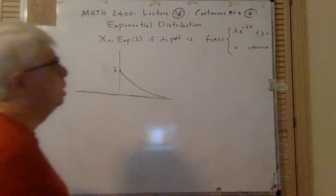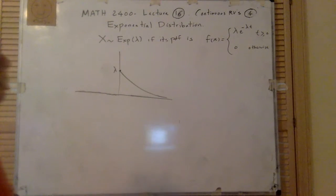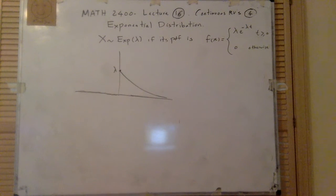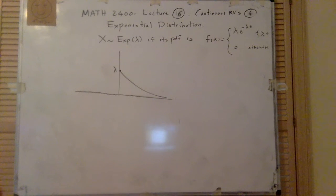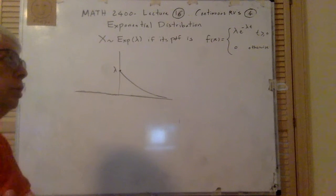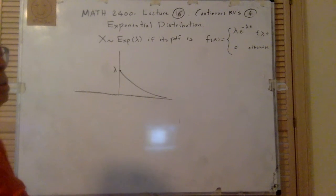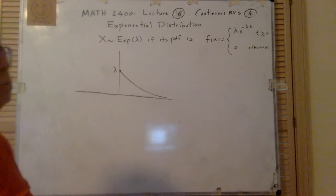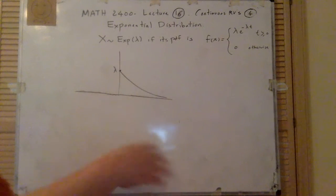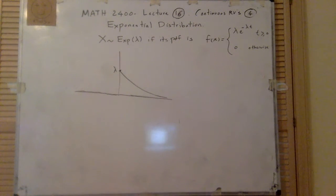So it can model lots of things. One of them is like a human, or a light bulb for example — how many hours does it last, or will it last more than a certain number of hours. It can be applied to anything where, in time, something happens.